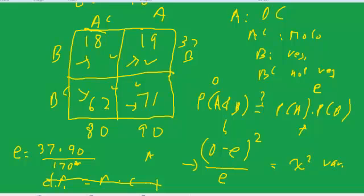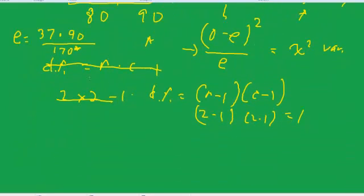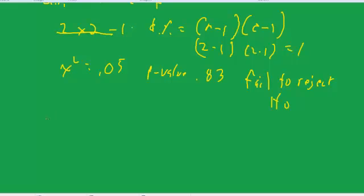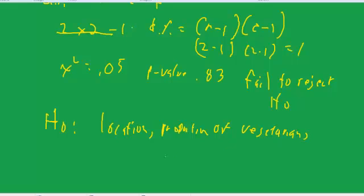Okay. So, we got a chi-square of 0.05 and a p-value of 0.83, which is a very high p-value, so we fail to reject the null hypothesis. Well, what is the null hypothesis? In a chi-square independence test, the null hypothesis is that the two variables are independent. In this case, the two variables are location and proportion of vegetarians independent. So, what this says is it doesn't seem to matter where I locate my vegetarian restaurant.